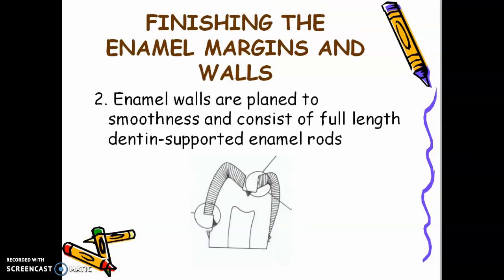Enamel walls are planed to smoothness and consist of full-length dentine-supported enamel rods. All enamel should be supported by sound dentine — that is our rule in doing tooth preparation. For number six, you use your hand-cutting instruments to finish enamel margins and walls.